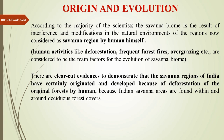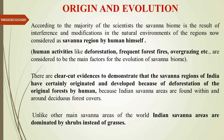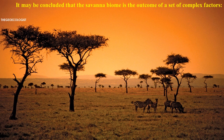There are clear-cut evidences demonstrating that Savannah regions, especially in the Indian context, have originated and developed because of deforestation of original forests by human beings. Indian Savannah areas are found within areas of deciduous forest. When those are cleared, the ground is dominated by shrubs and grasses with fewer trees, forming this biome. It may be concluded that the Savannah biome is the outcome of a set of complex factors.